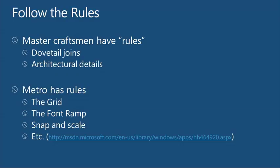Just like a craftsman uses dovetail joins — behind the scenes where no one can see them — because that's the best way to put two pieces of wood together, in Metro land we have rules we follow even when designing something completely unique. The rules in Metro come in a few flavors: the grid, the font ramp, and things about snap and scale. You saw me snapping apps to different sides of the screen.